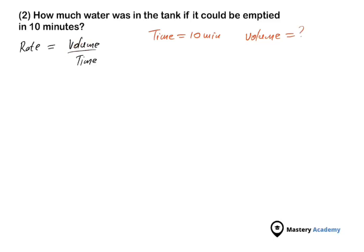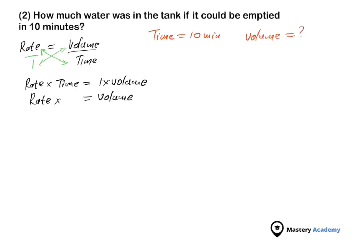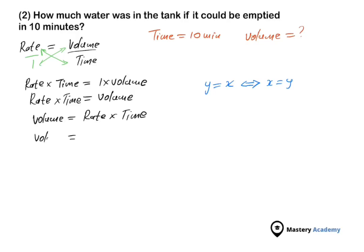We need to make volume the subject of the formula. Starting from rate equals volume over time, we cross-multiply: rate times time equals 1 times volume, which simplifies to volume. So volume equals rate times time. Just as y equals x is the same as x equals y, we swap the equation around: volume equals rate times time.